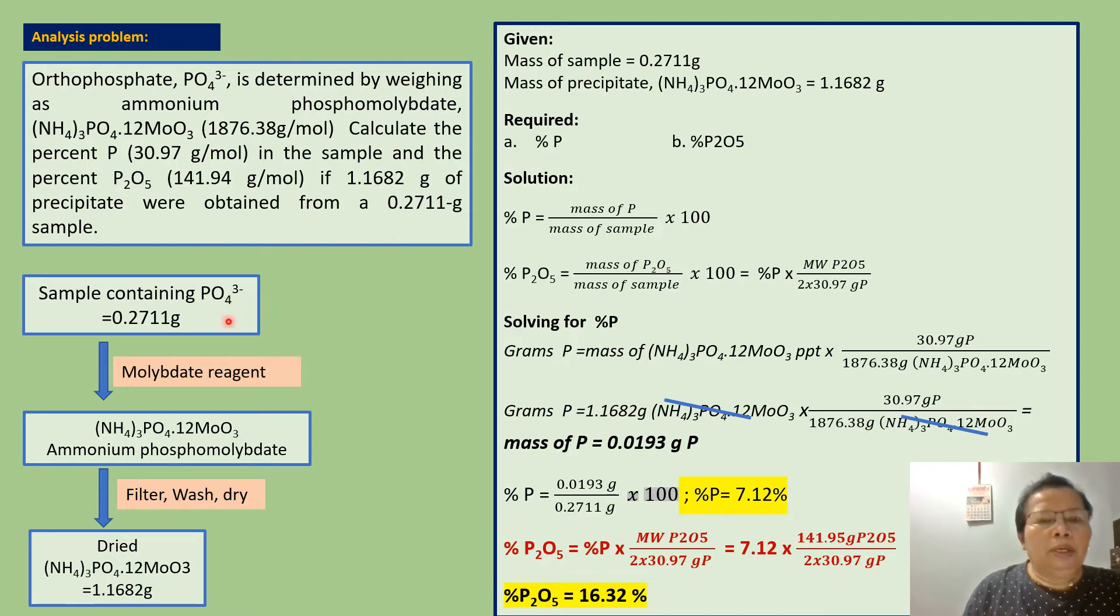We have here our sample containing phosphate ion. We treat this, dissolve this to convert our sample into a form suitable for chemical analysis. Then we add a reagent that can precipitate phosphate ion as ammonium phosphomolybdate. Since the precipitate is ammonium phosphomolybdate, the reagent added to our sample is the molybdate reagent.